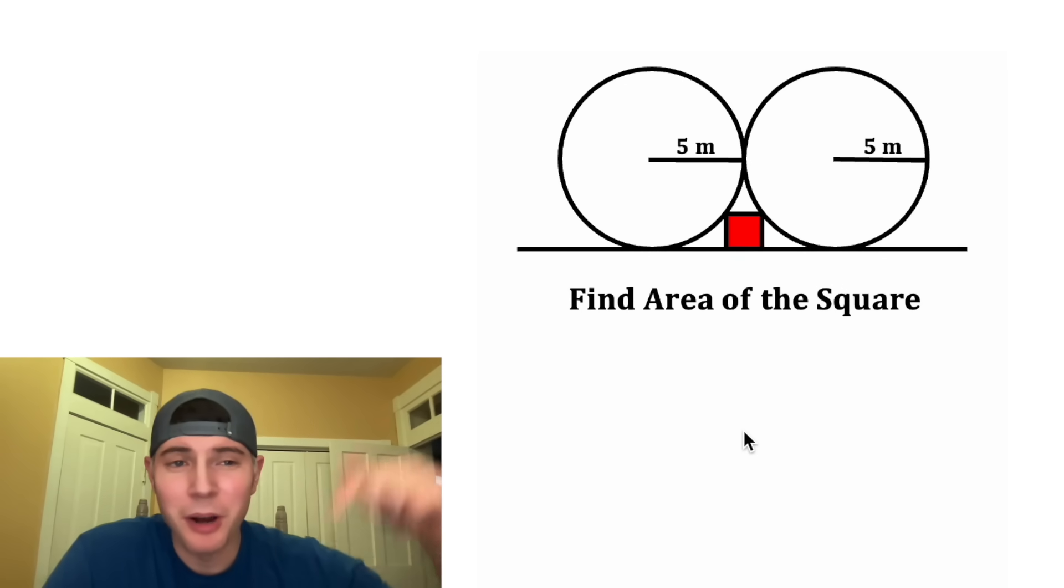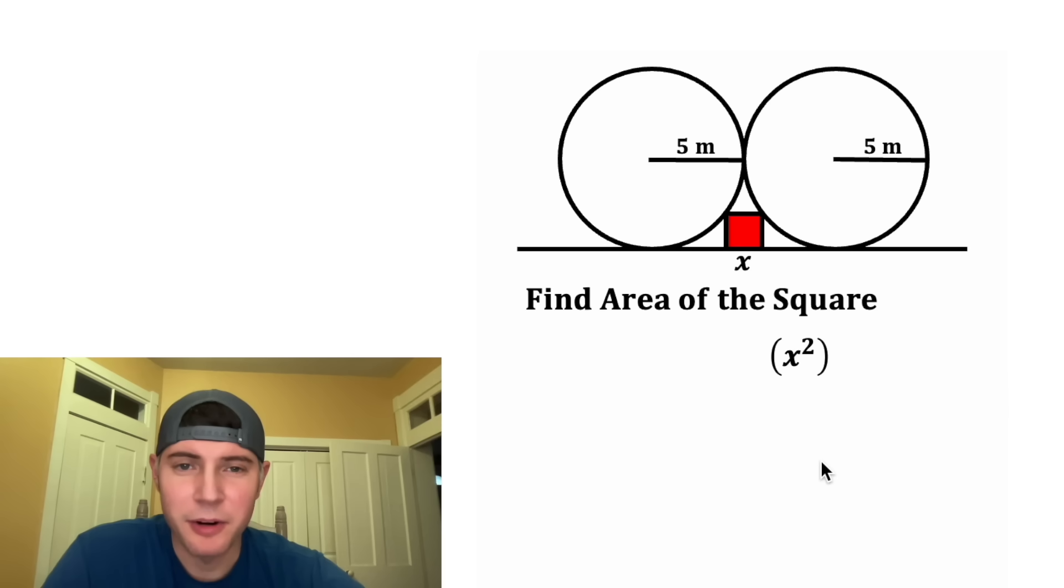If you want to try this on your own, pause it right now because I'm going to solve it in three, two, one. First step, I want to label the sides of this square X. So the area we're going to solve for is going to be X squared. And let's stick that right over here.